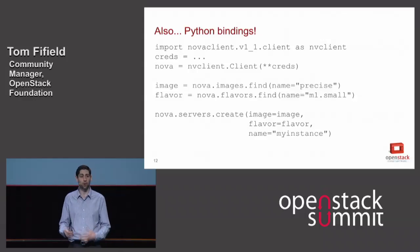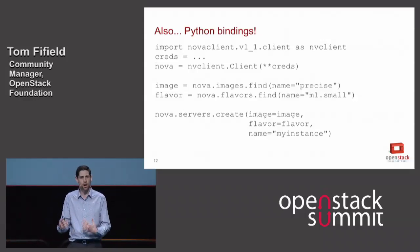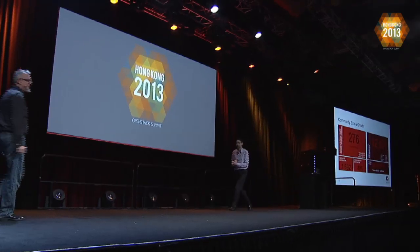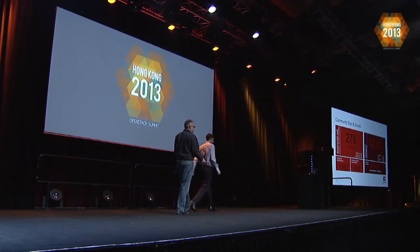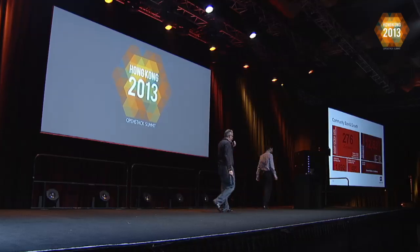I'd like to invite our COO, Mark Collier, up to the stage to talk about why OpenStack is more than just software. OpenStack is more than just code — it's absolutely about the community. We have over 12,000 members in the foundation, and just in the Havana release from six months of development, we had over 20,000 patches merged. That makes it one of the most active open source projects.